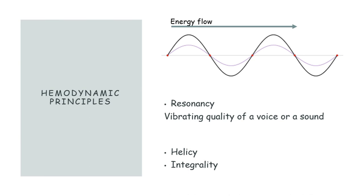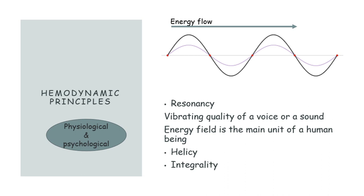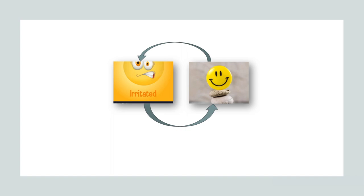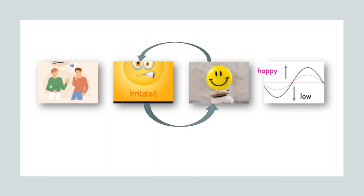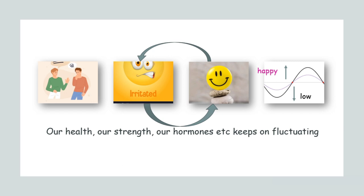According to the Science of Unitary Human Beings, the energy field is the main unit of a human being. It contains all systems functioning together — physiological and psychological. The easiest example to understand is the emotional fluctuations we have throughout life, like the cafe example: I was happy, suddenly got irritated, then left and met a friend so I was happy again. Then recalling the incident made me angry, and then talking about other things made me forget the anger. So emotions are continuously resonating, and similarly our health, strength, and hormones keep fluctuating — these fluctuations put an impact on our energy field.